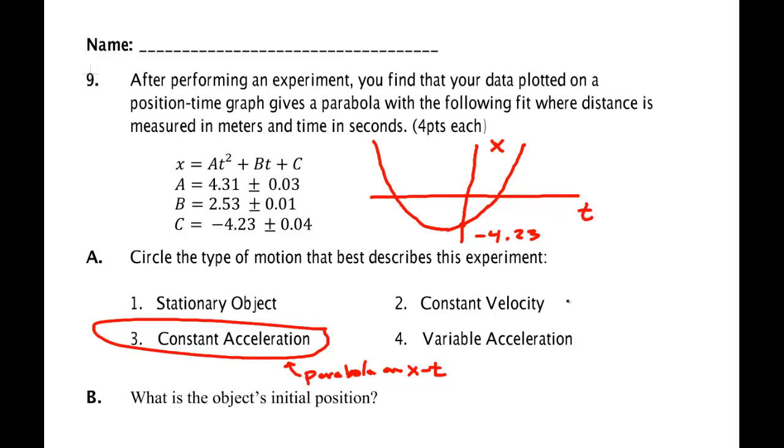Constant velocity would be a straight line with non-zero slope on an XT graph.